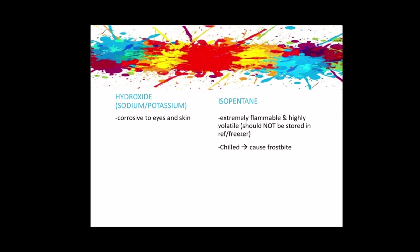Hydroxide — either sodium or potassium — is corrosive to eyes and skin. Isopentane is extremely flammable and highly volatile, and should be stored only in a refrigerator or freezer suited for explosive atmosphere. Chilled isopentane can cause frostbite. Excessive exposure to its vapors can cause irritation of the respiratory tract, cough, and irregular breathing. Accidental ingestion can cause vomiting, headache, depression, and abdominal swelling.